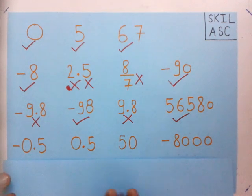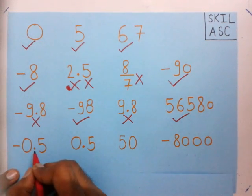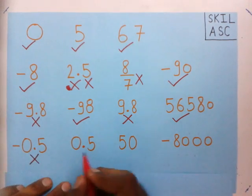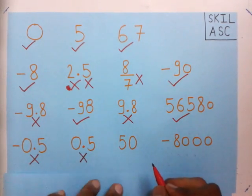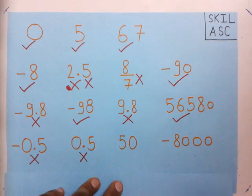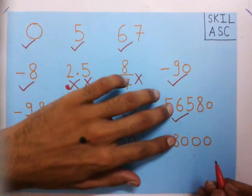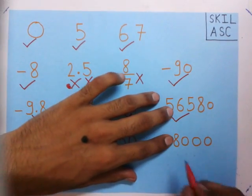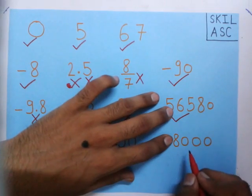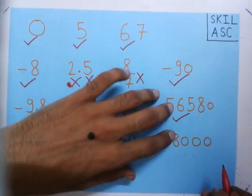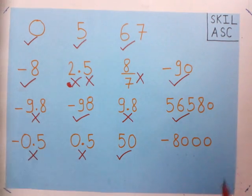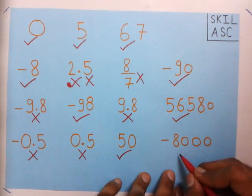Now you see minus 0.5. This number contains a decimal point, so it is not an integer. Now you see 50 — 50 is used while counting, so this is an integer. Now you see minus 8,000. If I hide the minus sign, you see 8,000, which is used while counting. We have put a negative sign to this number, and we know that the negative of a number used for counting is an integer. So minus 8,000 is an integer.